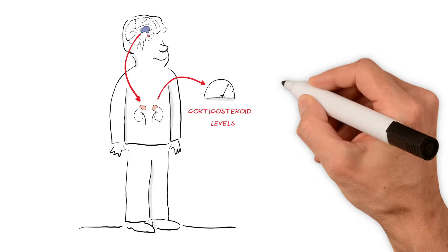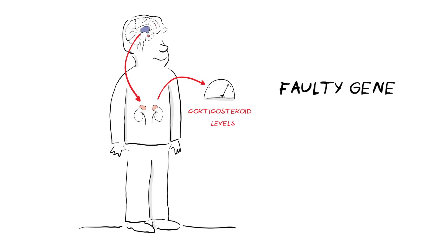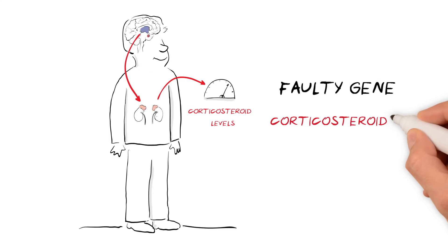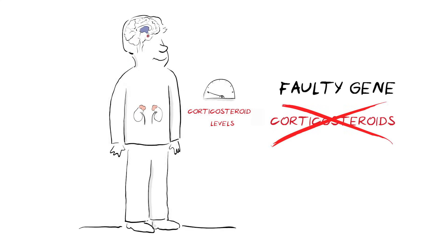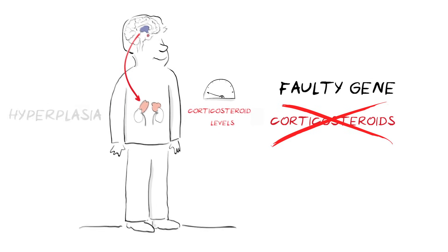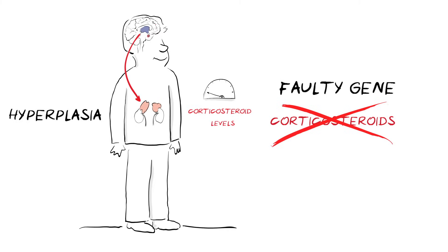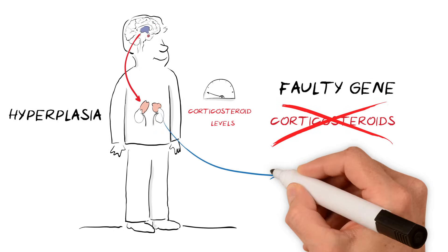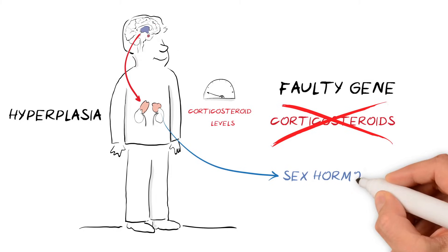In people with CAH, a faulty gene means that the corticosteroid hormones can't be produced. The brain detects the low level of corticosteroids in the blood and sends signals to the adrenals to work harder. As a result, the adrenals grow in size, which is what hyperplasia means. But because of that faulty gene, the gland still can't make the corticosteroids, so more of the sex hormones are made instead.